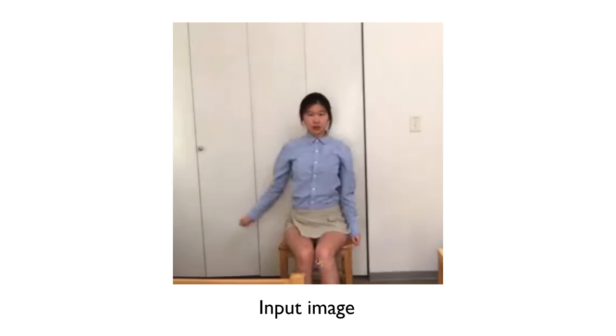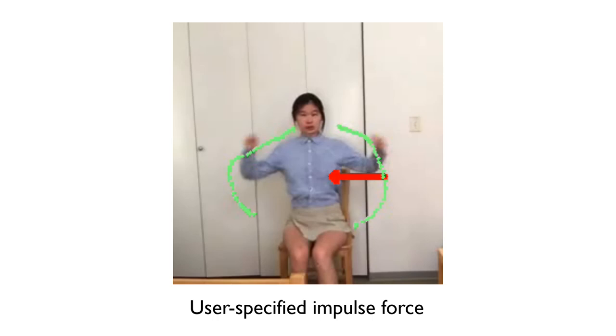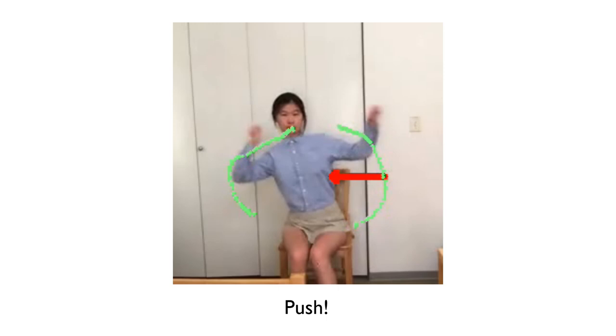We leverage the expressive power of 3D simulation and visual realism of 2D videos to present a new method for generating controllable and dynamically responsive human animation that appears photorealistic.